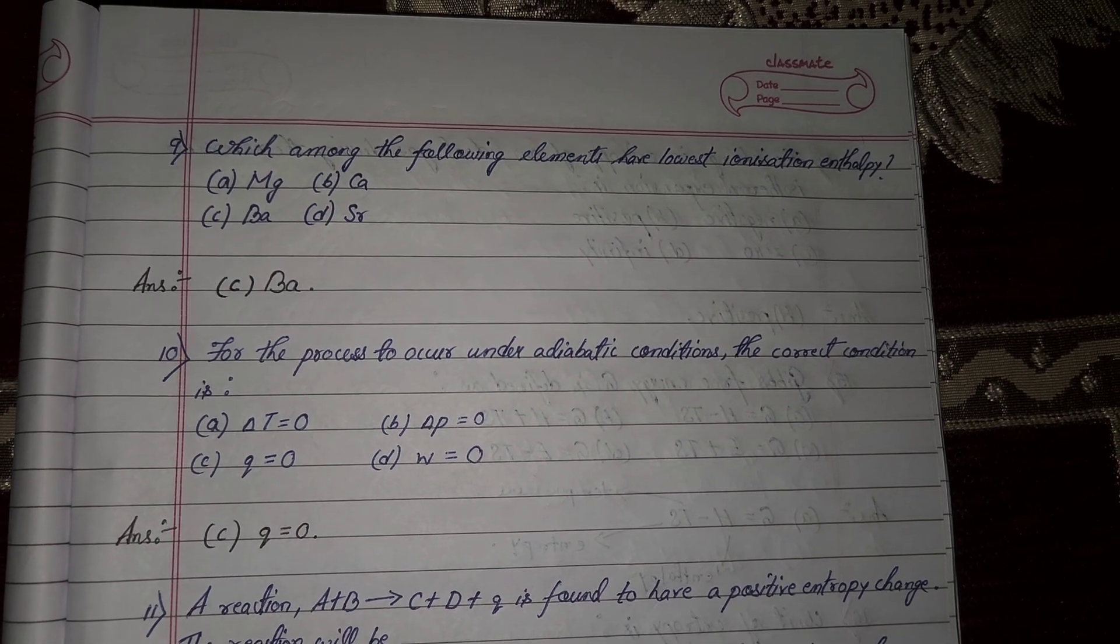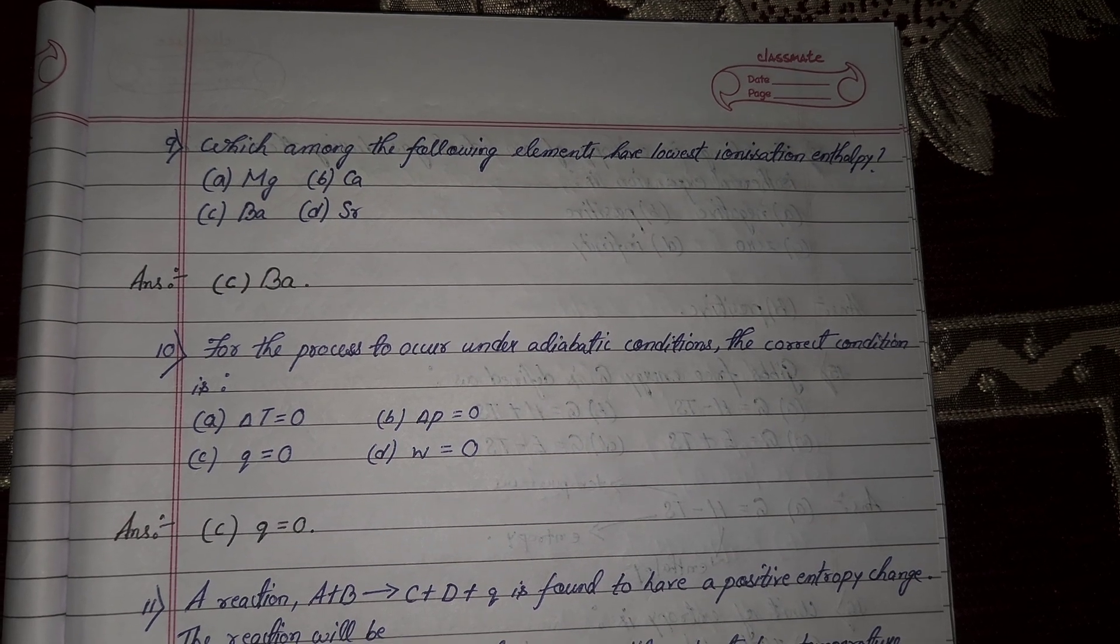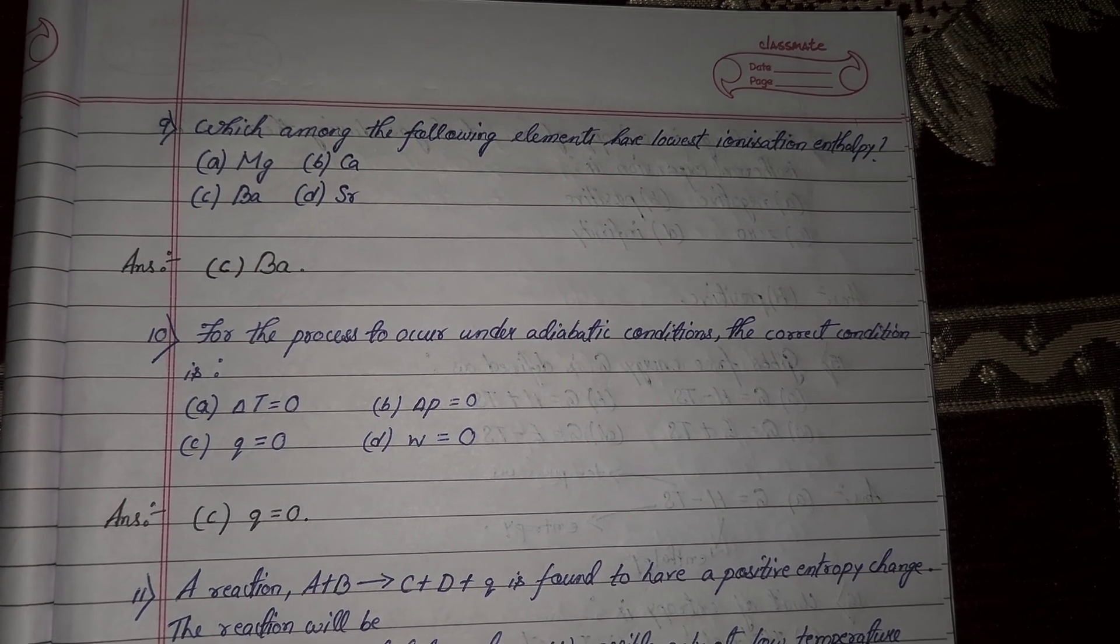Next question 9, which among the following elements have lowest ionization enthalpy? Option number C, barium will be your correct answer.